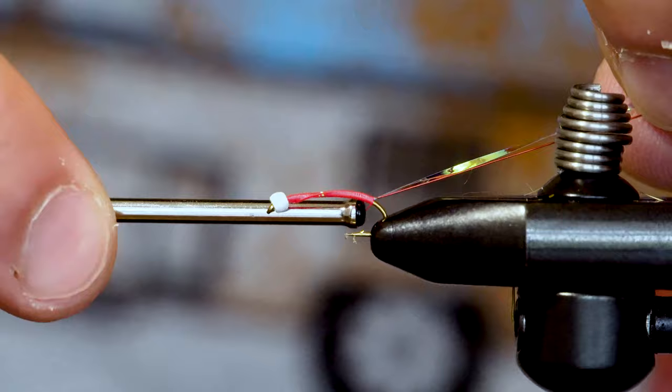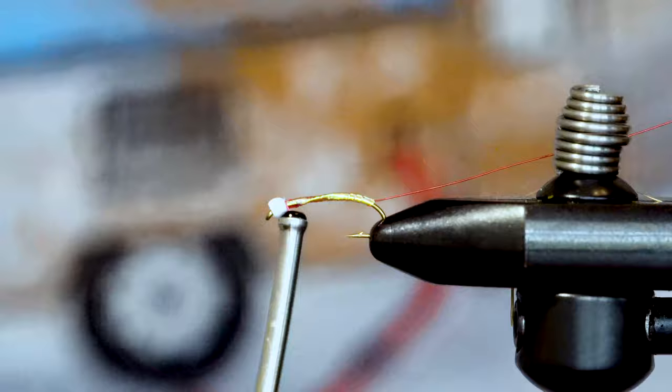While wrapping the mylar forward, be careful not to damage the mylar on the hook point. Bind down the mylar and trim it free, and then bring the red wire forward in wider wraps.